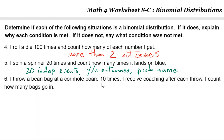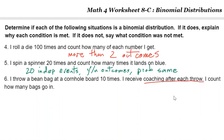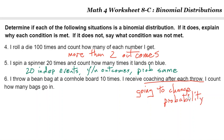Throwing a bean bag at cornhole 10 times, but receiving coaching after each throw — coaching after each throw is going to change the probability, hopefully for the better. It's important to recognize which situations work with a binomial distribution and which don't. Usually one of the four conditions is guilty of disqualifying it.